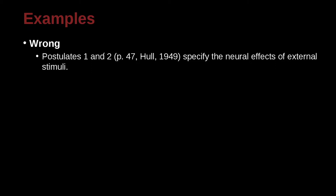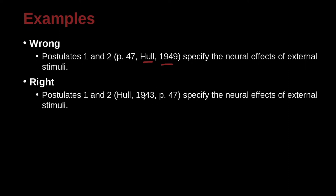Postulates 1 and 2, page 44, Hall, 1949, specify the neural effects of external stimuli. In this case, we have the author and the year, but the page is in the wrong position. You need to have author comma year. And please pay attention — space after the comma, space after the period for 'p.', and here it's p. 47. If this was two pages like 47 to 48, then here we would have 'pp.' like that.